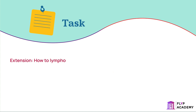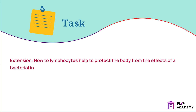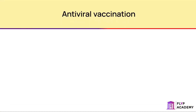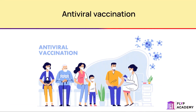Extension: How do lymphocytes help to protect the body from the effects of a bacterial infection? Lymphocytes produce antitoxins which neutralise the poisons produced by bacteria.